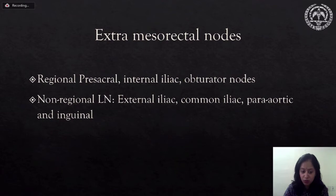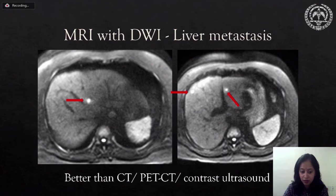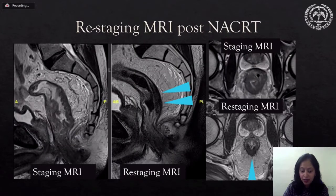Extra-mesorectal nodes may be regional or non-regional. Presacral, internal iliac, and obturator nodes are regional lymph nodes, whereas external iliac, common iliac, paraaortic, and inguinal are metastatic. MRI is extremely useful and very sensitive in identifying sub-centimetric liver metastasis, and is by far the best modality to detect this kind of liver metastasis. Post-treatment change in rectal cancer shows the posterior wall rectal growth becoming thick and hypointense on restaging MRI.